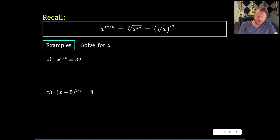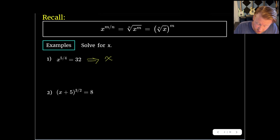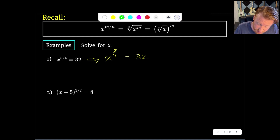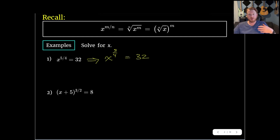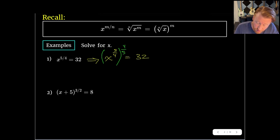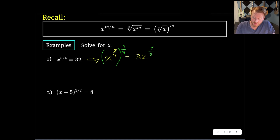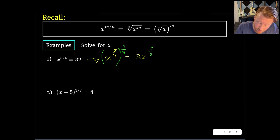To solve this first one, we have x to the 5 fourths is equal to 32. In the first step, I want to get rid of this 5 fourths — really I want to turn that into a 1. If I have x raised to the first power, I've solved for x. So I'm going to raise both sides to the reciprocal power. I'm going to raise both sides to the 4 fifths power, because 5 fourths times 4 fifths equals 1, using properties of exponents.